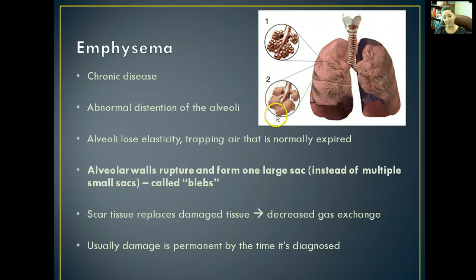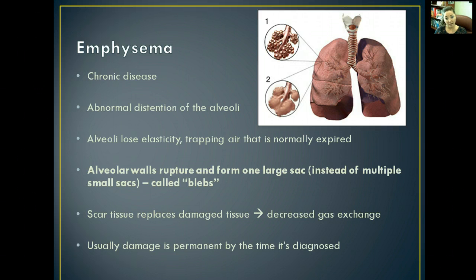The alveolar walls rupture but form together into these large sacs — and once they start forming together like that, they're eventually called blebs. Normally, alveoli are their own little circular structures, kind of like clusters of grapes. When those walls bleed together into large sacs like blebs, the capillaries rupture and they're no longer contributing to gas exchange. Think of tiny balloons versus a large balloon — a large sac takes much longer and is far less effective for gas exchange.